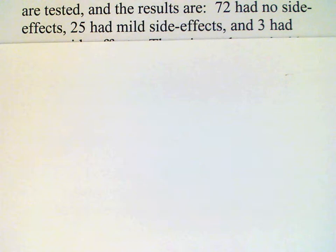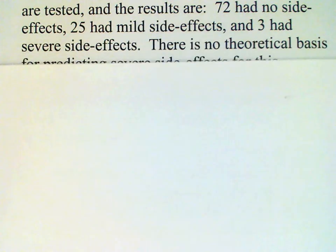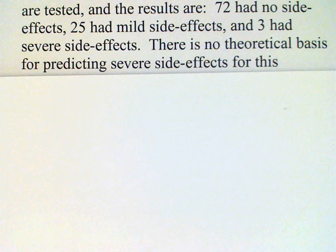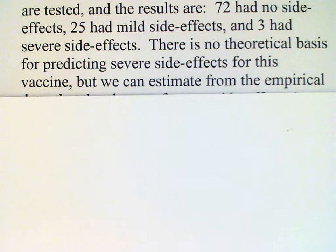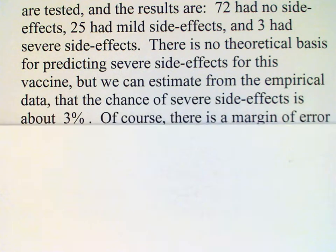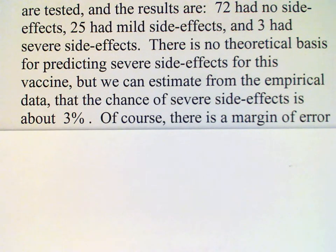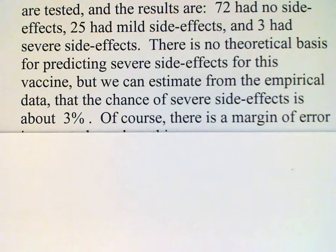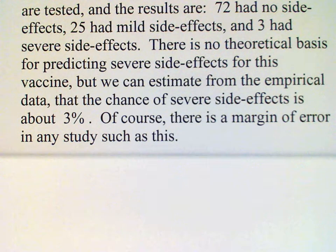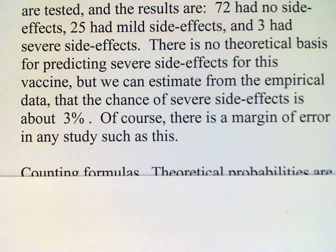and 3 had severe side effects. We have no theoretical basis in this experiment for predicting severe side effects, but we can estimate from the evidence that the chances of severe side effects of this vaccine are about 3%. And of course there will be a margin of error in any study of this case.